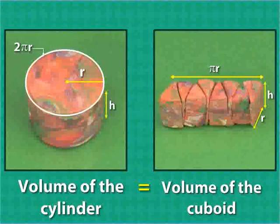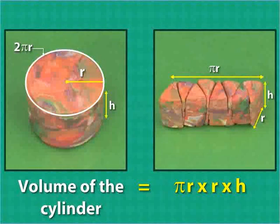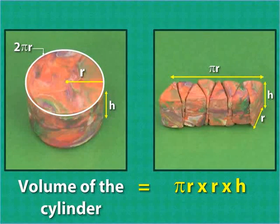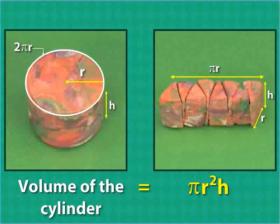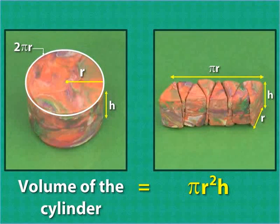The volume of the cuboid is the product of its length, breadth and height, so the volume of this cuboid is πr²h. Thus, the volume of the cylinder is πr²h.